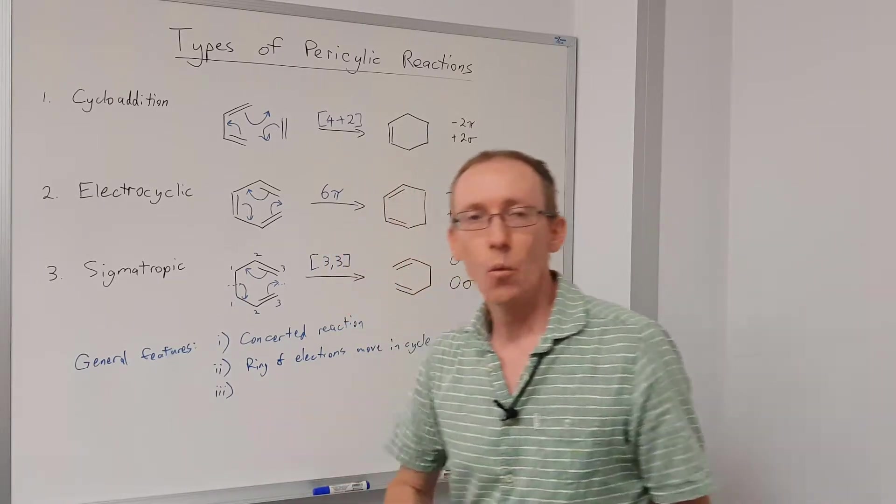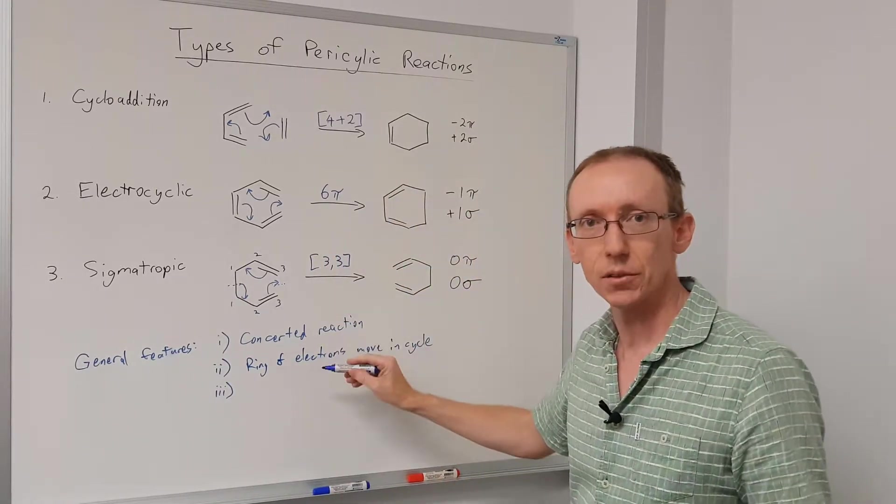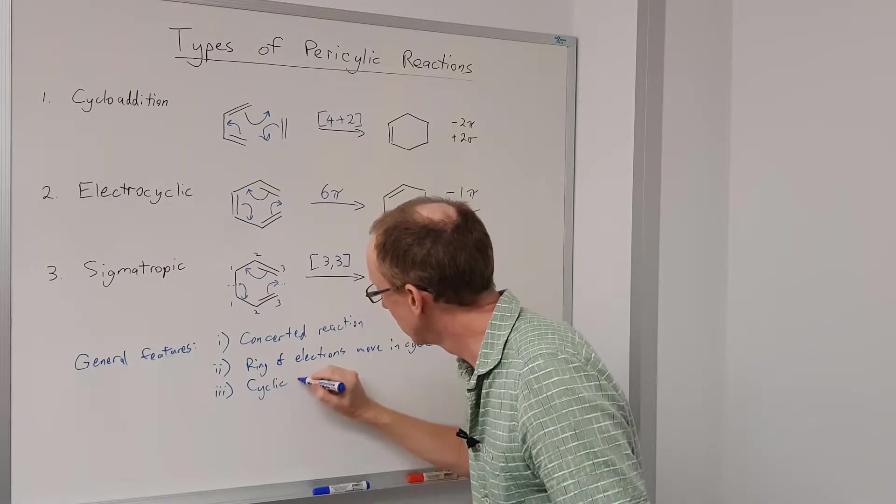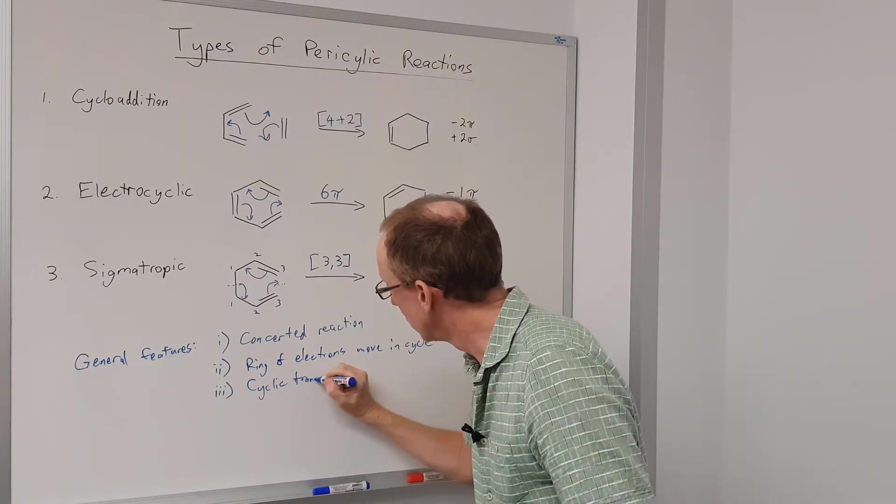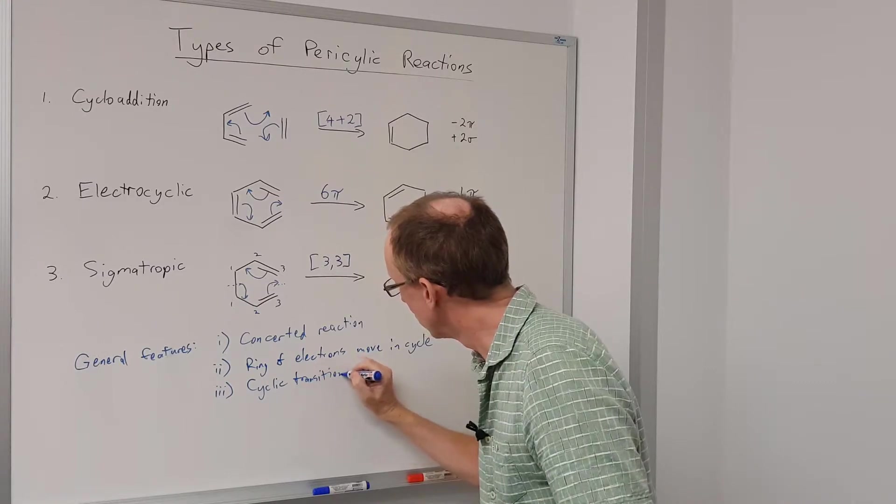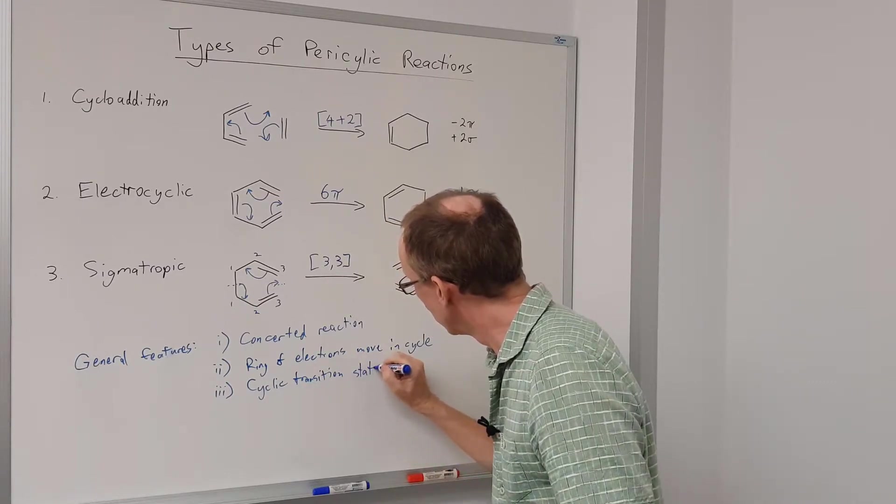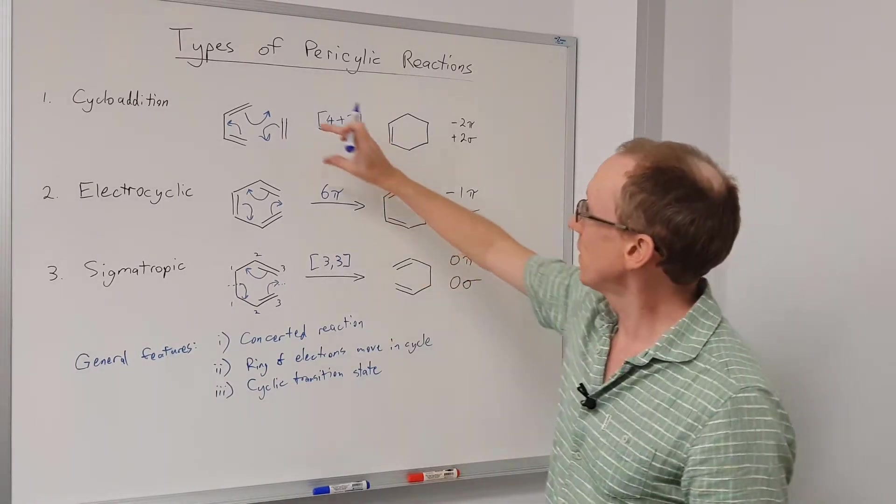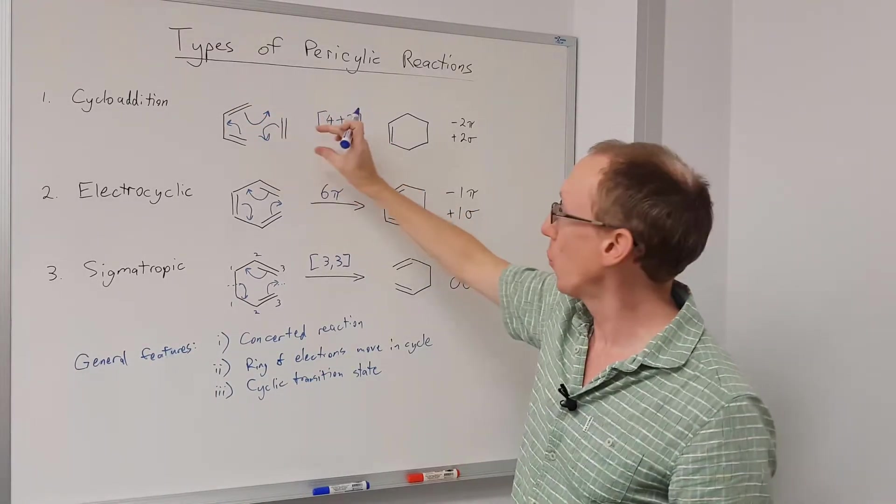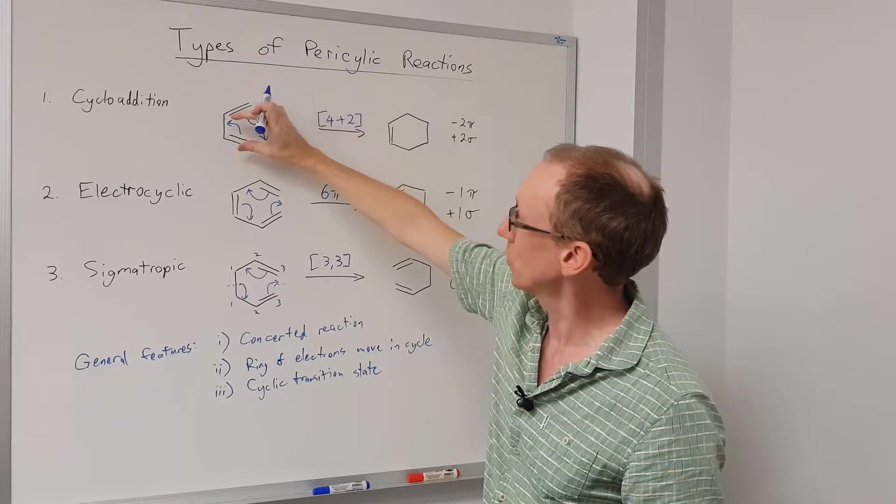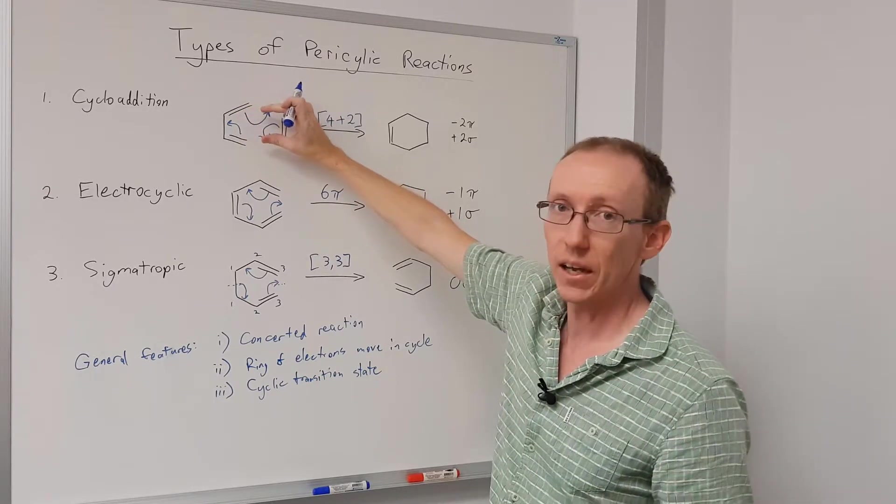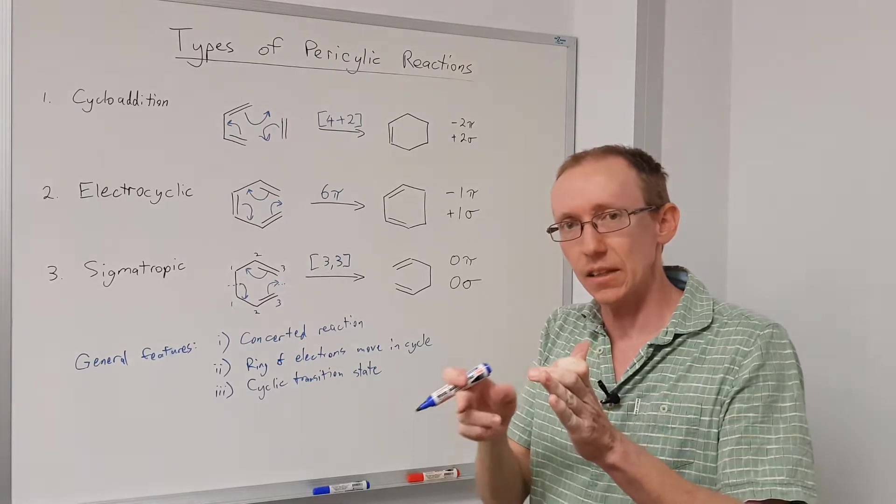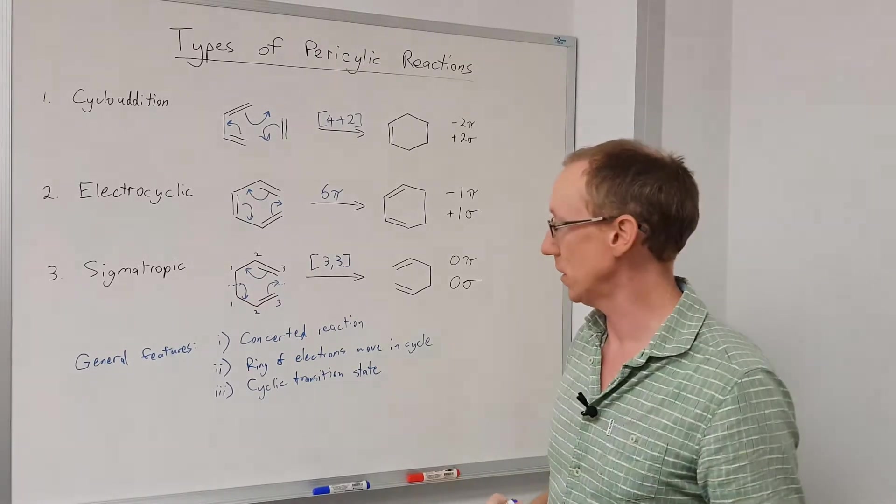Thirdly, we're going to have a cyclic transition state. These two are really quite closely related. Okay, so when in a cycloaddition, for example, when that alkene comes across the diene, those two add together in a way that at the transition state, the transition state is a cyclic species.